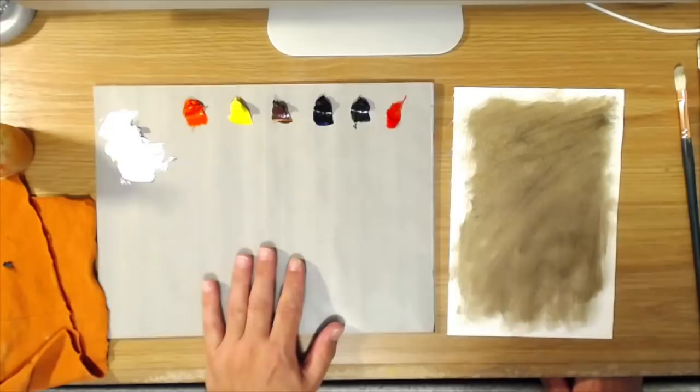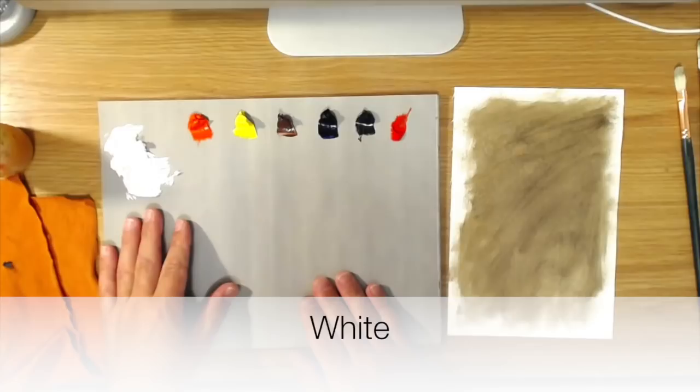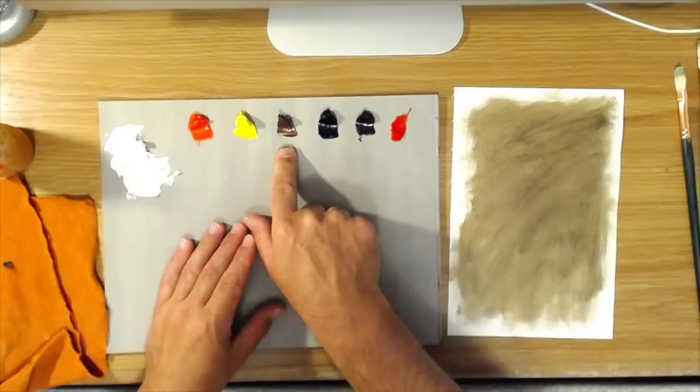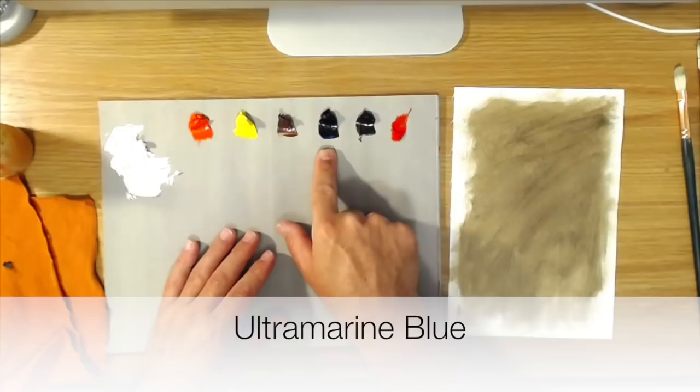The colors I'm using today are white—you can use titanium white or whatever white you have—cadmium red light, cadmium yellow light or any bright yellow you have, transparent red oxide or burnt sienna, ultramarine blue,